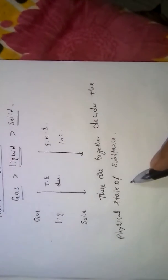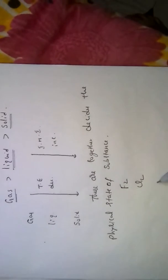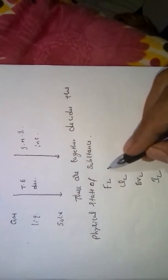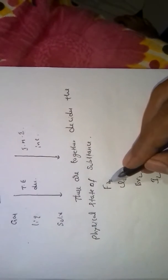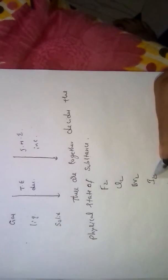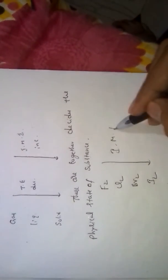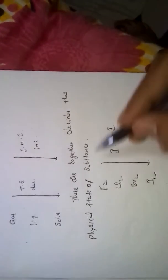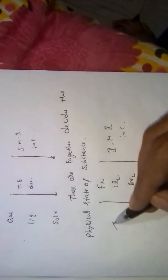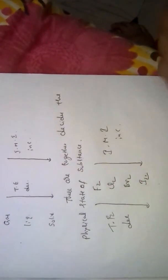For example, if we take halogens: fluorine, chlorine, bromine, iodine. From fluorine to iodine, the first two are gases, bromine is liquid, and iodine is solid. Intermolecular interactions increase from fluorine to iodine, and thermal energy decreases from fluorine to iodine.